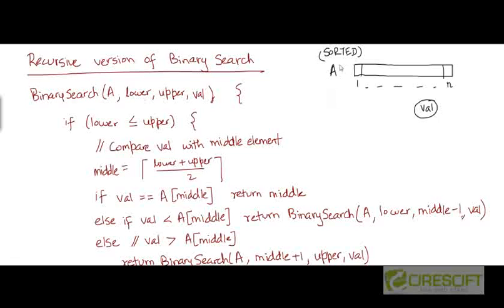We will again assume that we are given a sorted array a, whose indices range from 1 to n, and we are given a value named val, which we want to check whether it's present or absent in this sorted array. If we find this value, we would like to return the index in the array a where the value is present. If not, we return a flag indicating that the value was not found.